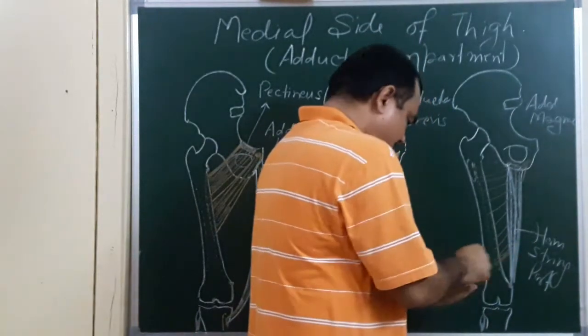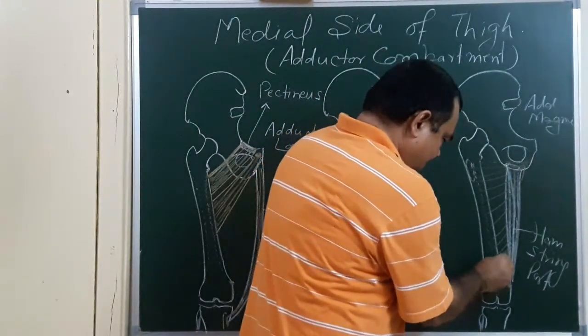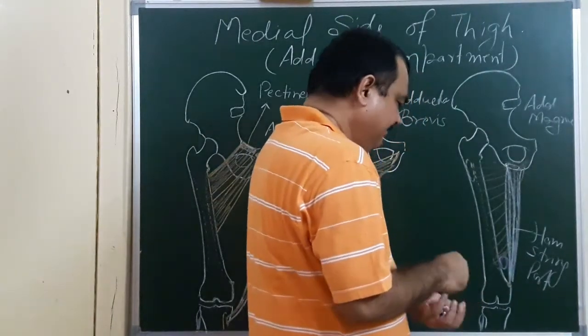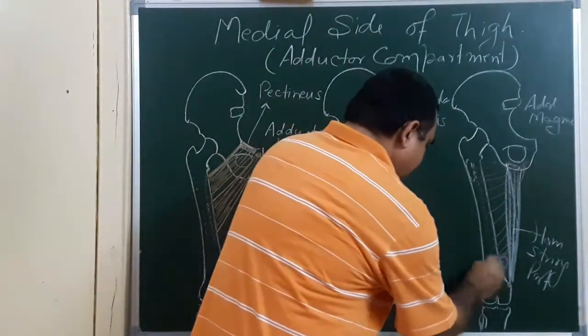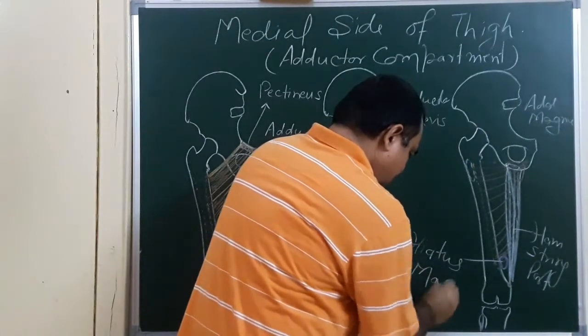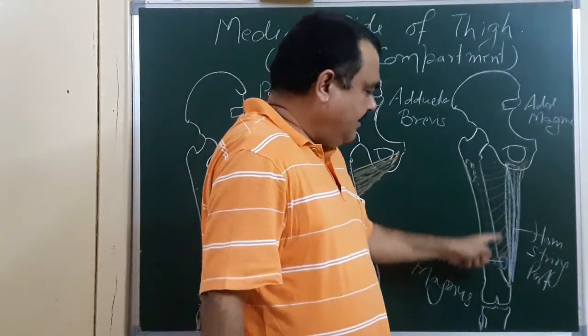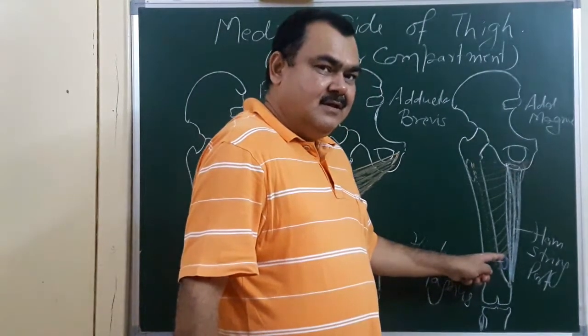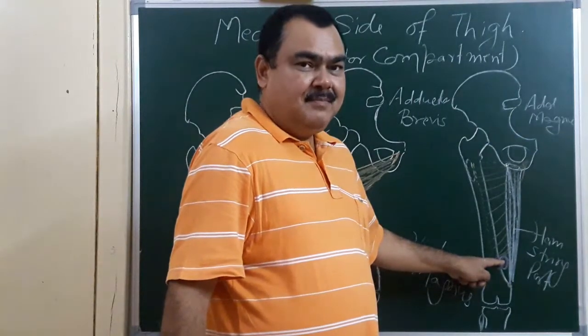Here is a tendinous gap. This is a tendinous gap present in this muscle, this is known as hiatus magnus. Through which femoral artery passes, femoral artery from anterior compartment, piercing this or passes through this, and becomes popliteal artery.